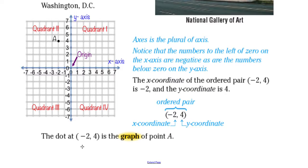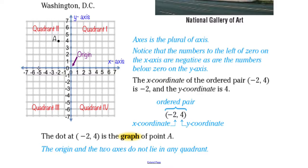The origin and the two axes do not lie in any quadrant. So if you have a point that lies on the x-axis or the y-axis, it does not belong to any quadrant. For example, does negative five, zero belong to quadrant two or quadrant three? The answer is neither, because negative five, zero lies on the x-axis.